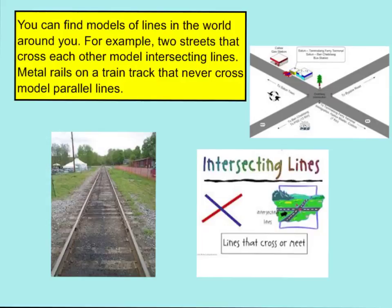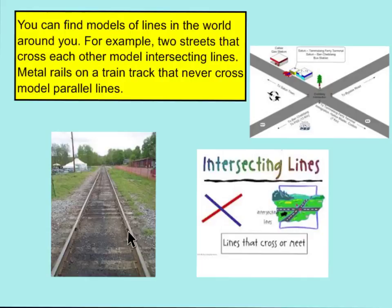You can find models of lines in the world around you. For example, two streets that cross each other model intersecting lines. Metal rails on a train track that never cross model parallel lines.